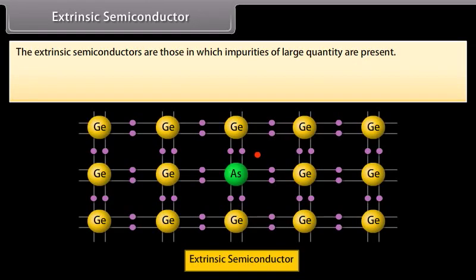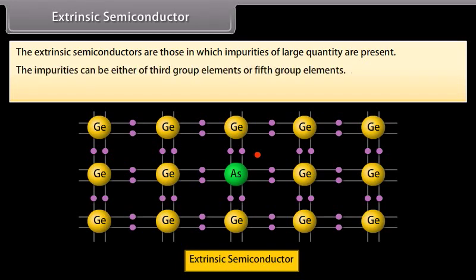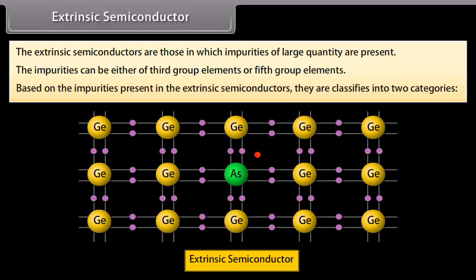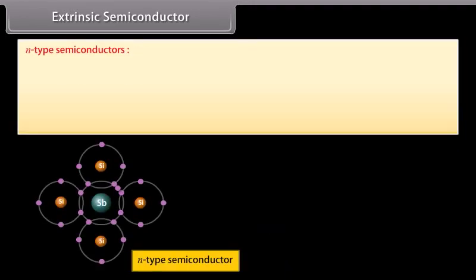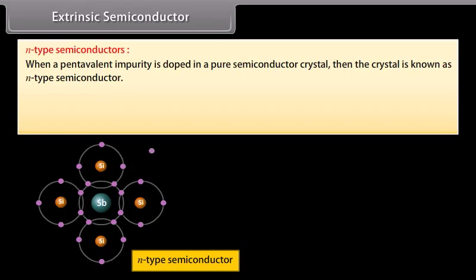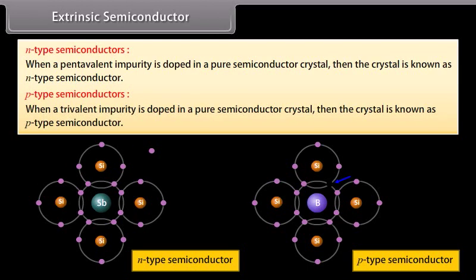Extrinsic semiconductors are those in which impurities of large quantity are present. The impurities can be either third group elements or fifth group elements. Based on the impurities present, extrinsic semiconductors are classified into two categories. N-type semiconductors: when a pentavalent impurity is doped in a pure semiconductor crystal, the crystal is known as an N-type semiconductor. P-type semiconductor: when a trivalent impurity is doped in a pure semiconductor crystal, the crystal is known as a P-type semiconductor.